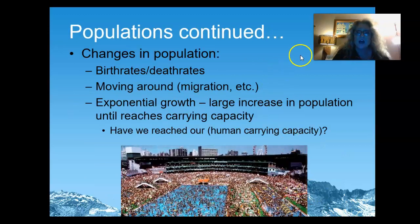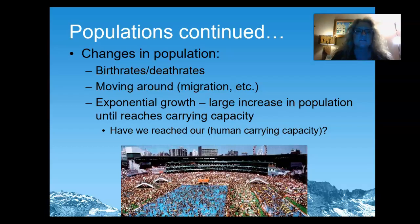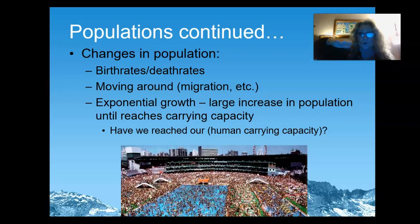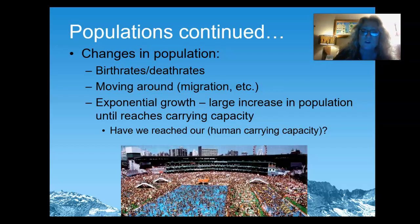Let's talk about how populations change. When things are born, hatched, or they sprout, that's coming into being, and then there are death rates. We measure birth rates and death rates in populations. We look at populations that move — monarch butterflies move from one place to another. We also look at the problem of exponential growth. Human beings are on an exponential growth curve right now. Have we reached the human carrying capacity? It's interesting to think about.